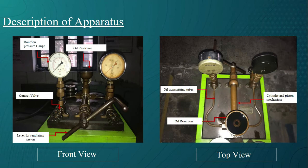The oil reservoir is connected to pressure gauges through oil transmitting tubes. The opening and closing of these tubes connecting to pressure gauges is governed by valves. In center of apparatus, there is a piston cylinder system and a lever which governs the movement of piston and cylinder. The cylinder is also connected to oil reservoir.